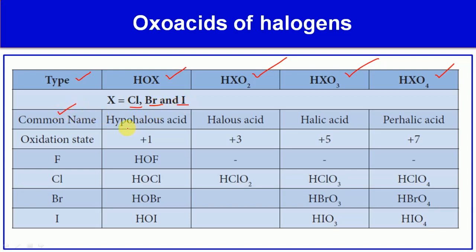The common names are: hypohalous acid, halous acid, halic acid, and perhalic acid. The oxidation states of the halogen are: +1 in hypohalous acid, +3 in halous acid, +5 in halic acid, and +7 in perhalic acid.